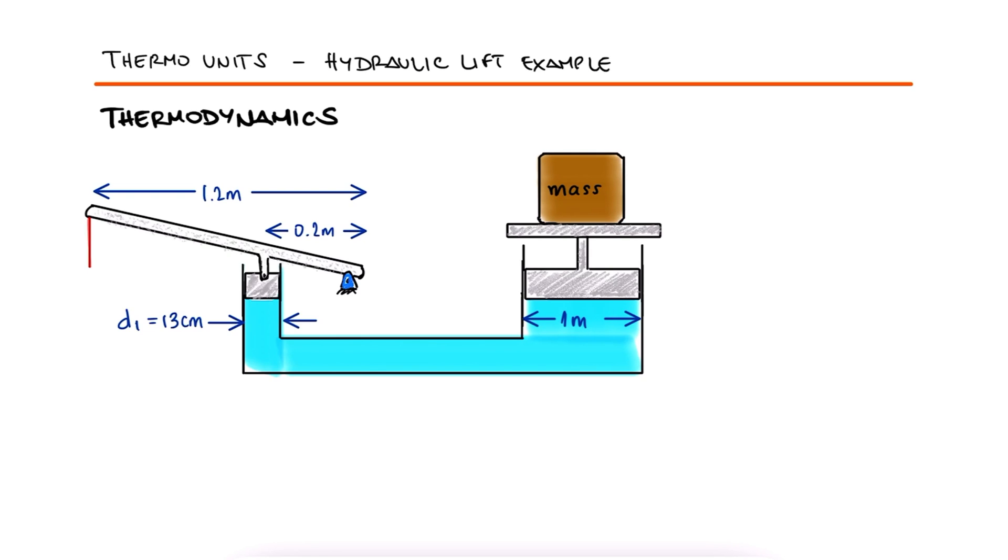If the downward force on the lever is p equal to 100 N, what is the mass that can be lifted on the platform connected to the large piston? What is the ratio between the input and output force of this hydraulic lift?